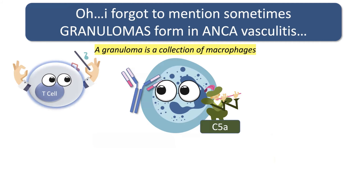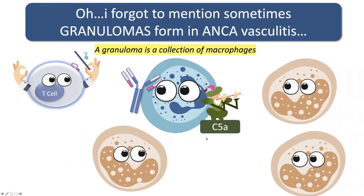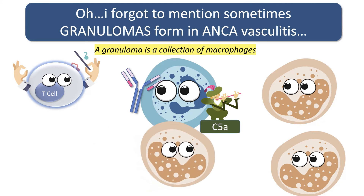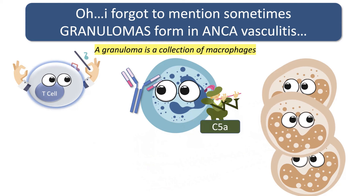Sometimes granulomas form in ANCA vasculitis. A granuloma is just a collection of macrophages — that's all it is. So in addition to everything mentioned, we'll have some monocytes that are drawn here, and monocytes differentiate into macrophages. When they come here, they help contribute to the immune response. But another job of macrophages is to mop up the debris and clear the area — kind of put an end to the whole immune reaction. But sometimes if they can't clear up the area and clear the debris, what happens is they'll form a little wall around it. So they're just going to wall it off — they're not going to fix it, they just wall it off. And so you might see a granuloma in some of those types of ANCA vasculitis.